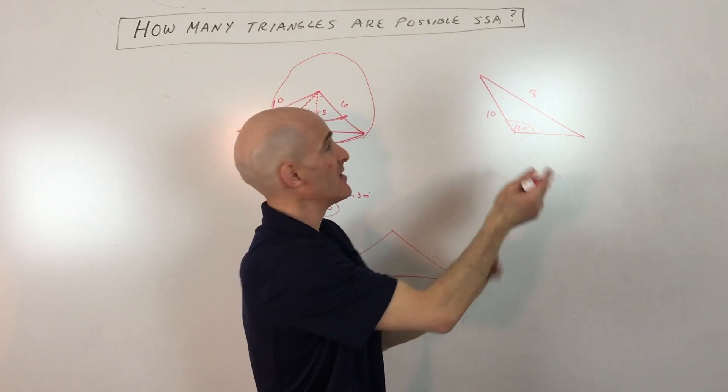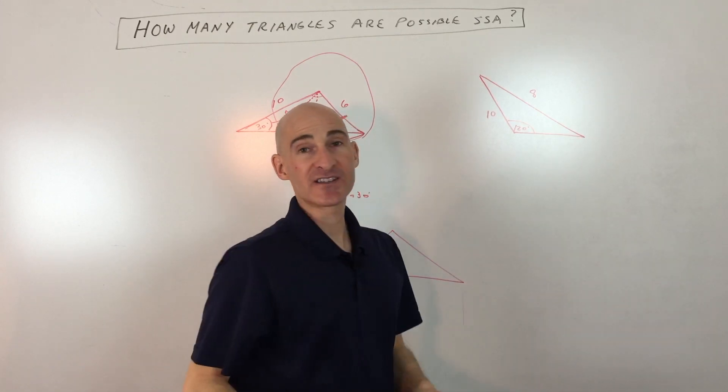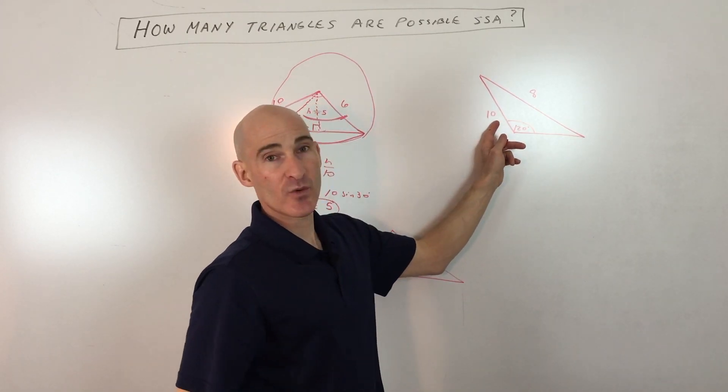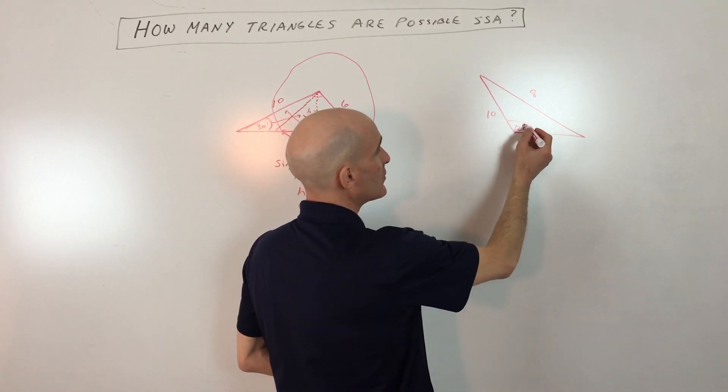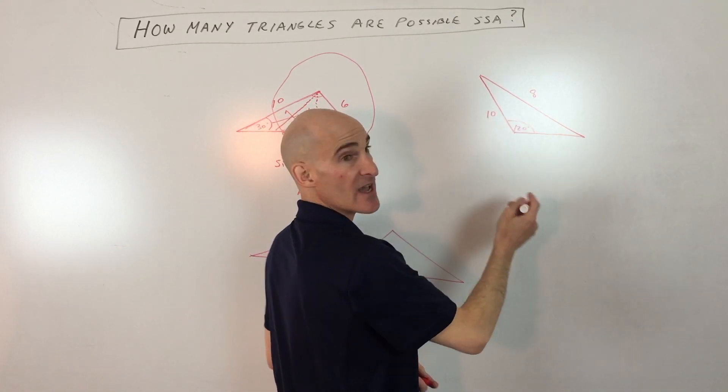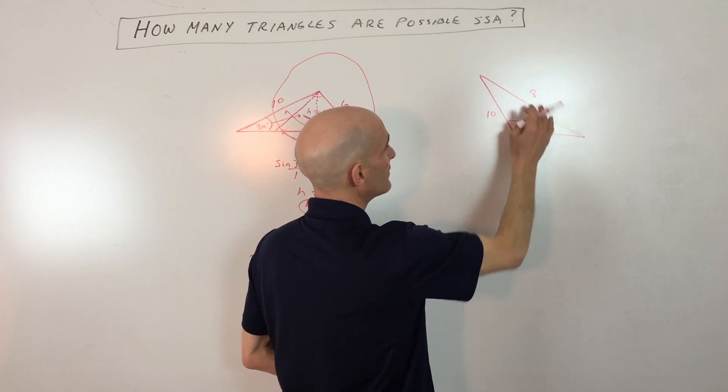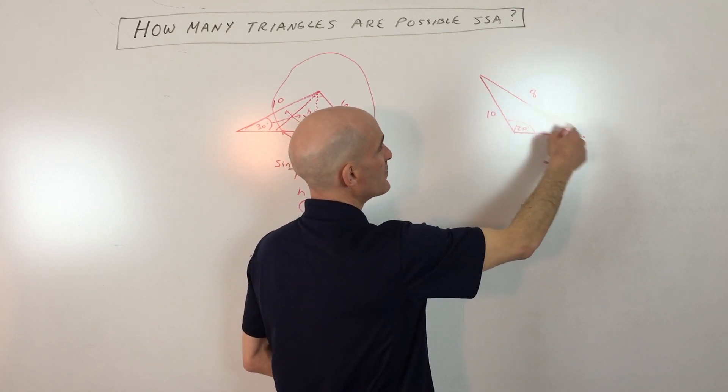If I open up that hinge, this side is going to be the longest side. It's going to be open very wide. But you can see in this case, that's not what's happening. We're looking at 8 being shorter than 10. If I draw this to scale, it would look something like that. You see there's this big gap here. This is not long enough